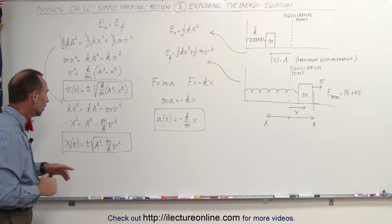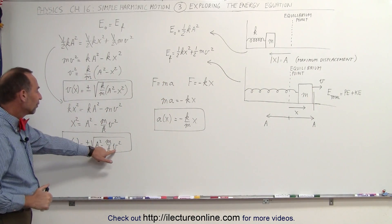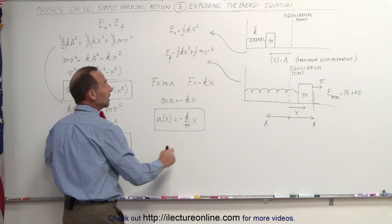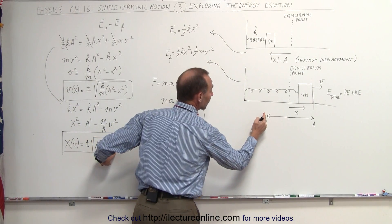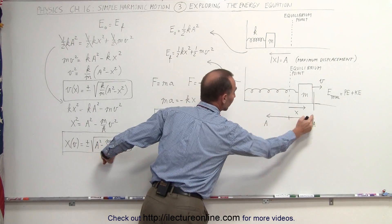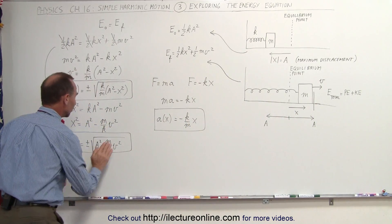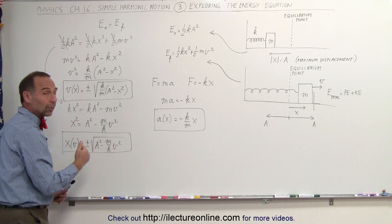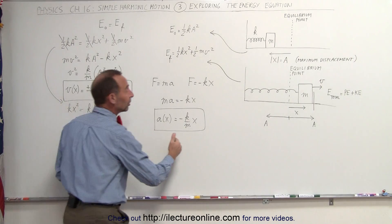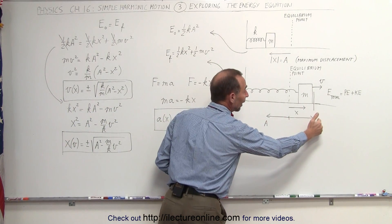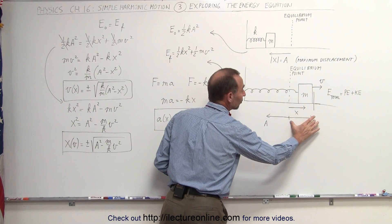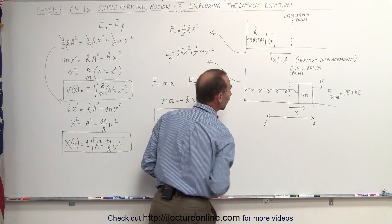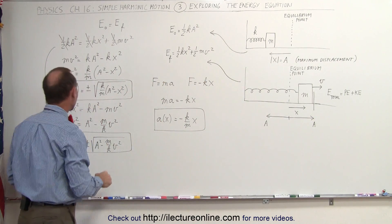Looking at the position equation — notice when velocity is zero, we are either at the far end on one side or the far end on the other side. When velocity equals zero, x is simply equal to plus or minus A: either on the far side to the right at a distance A, or a distance negative A away from the equilibrium point.